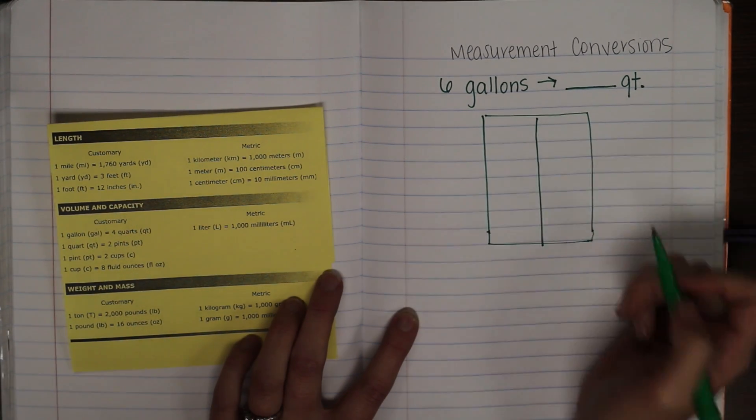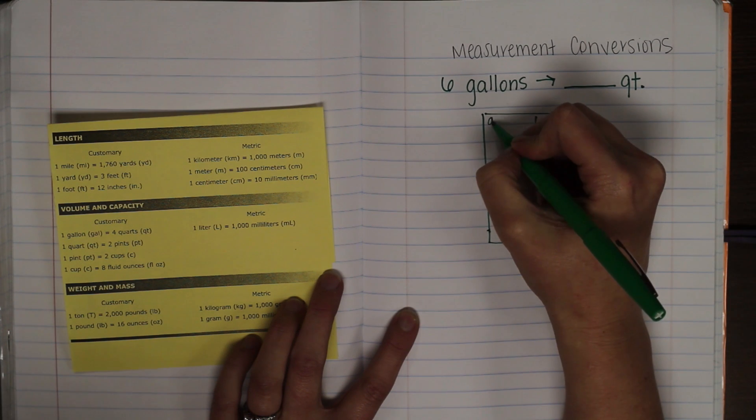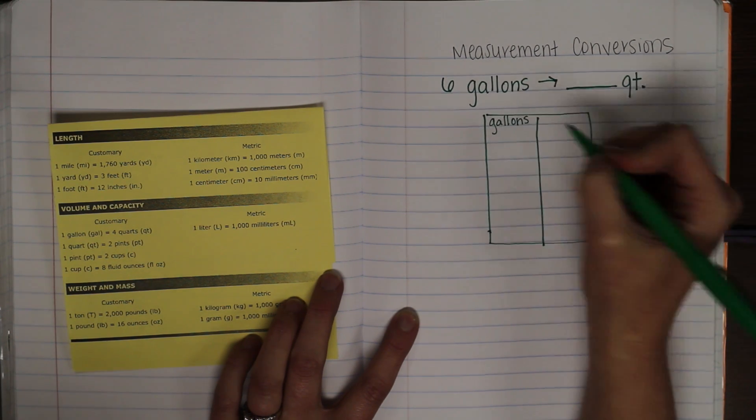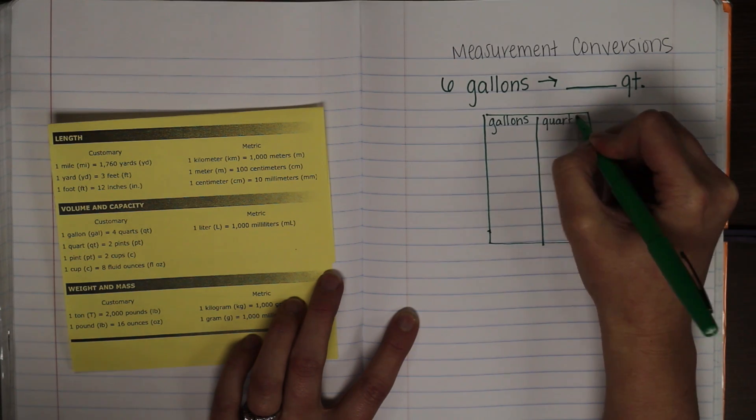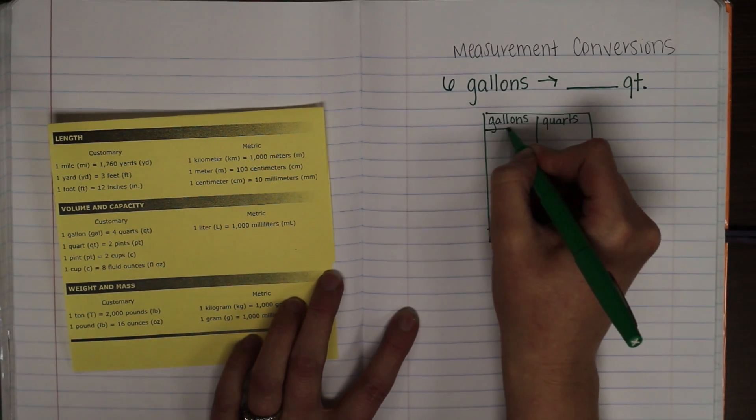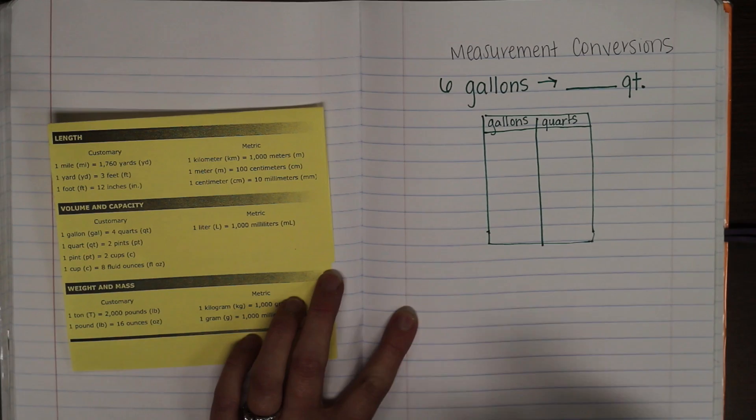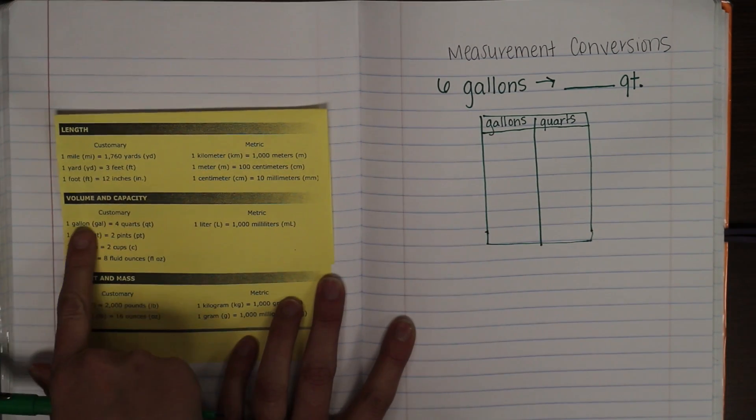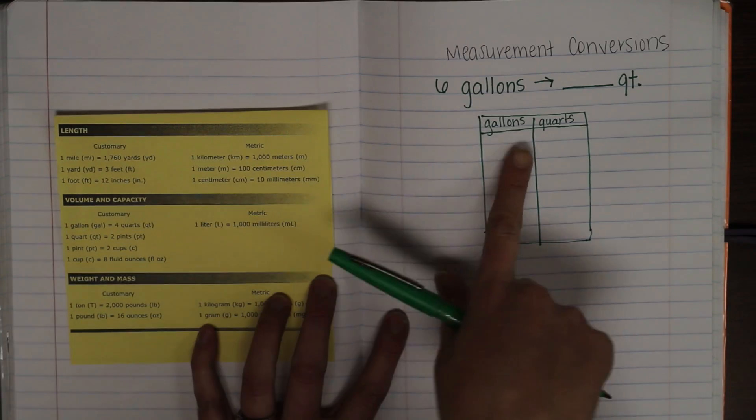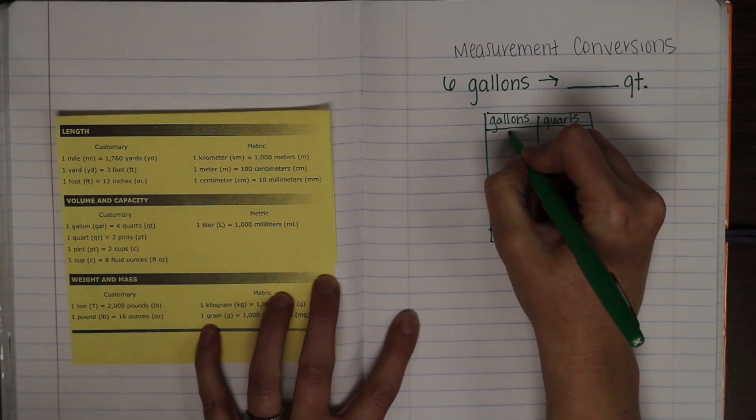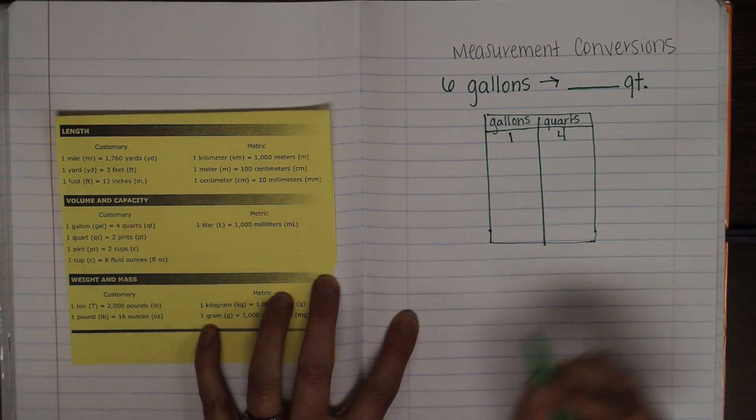Instead of X and Y, we're just going to call this gallons and quarts. Now, using our star chart, we can see here that one gallon is equal to four quarts. So, that's the first piece of information we're going to put on our table. One gallon, four quarts.